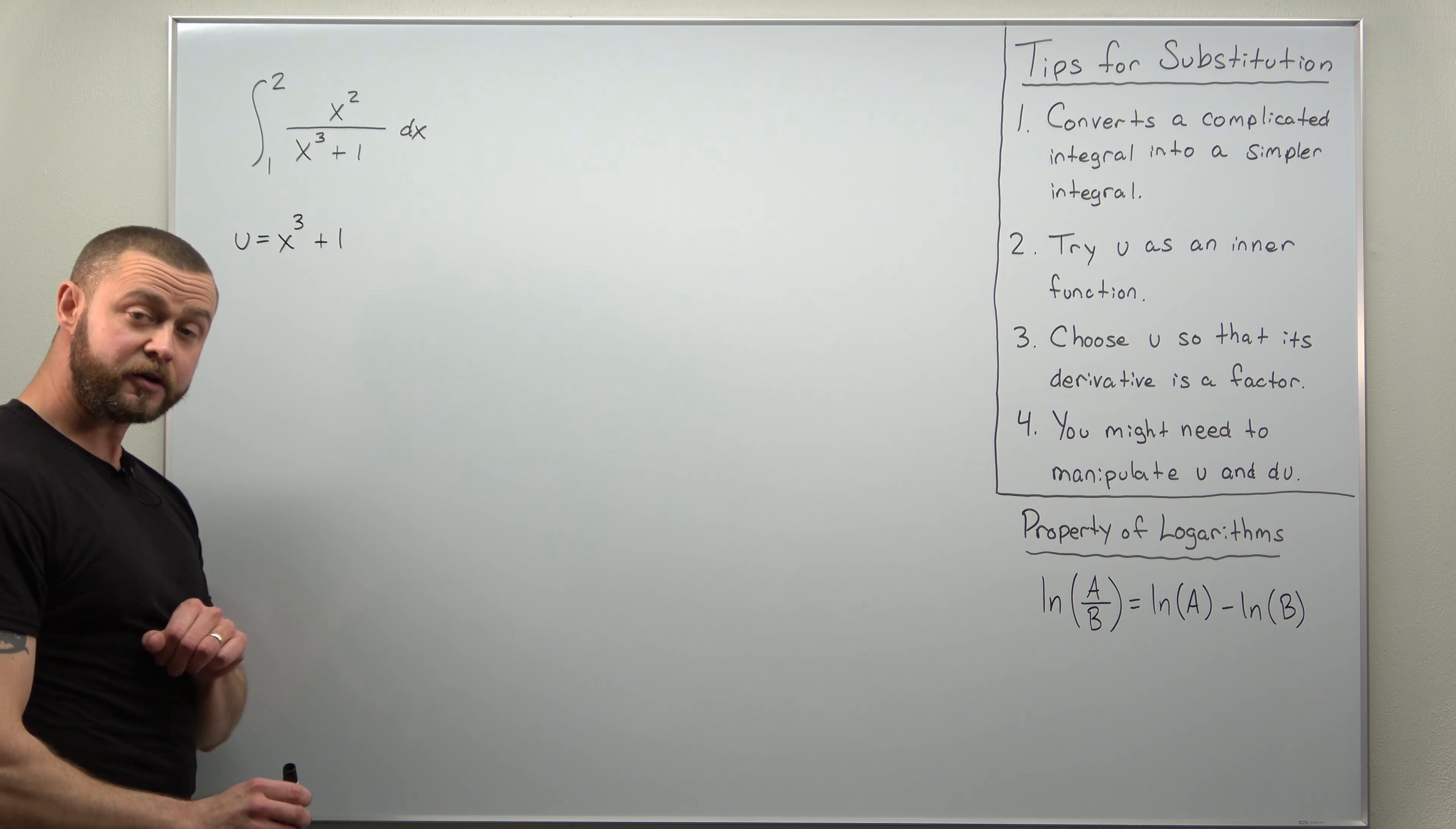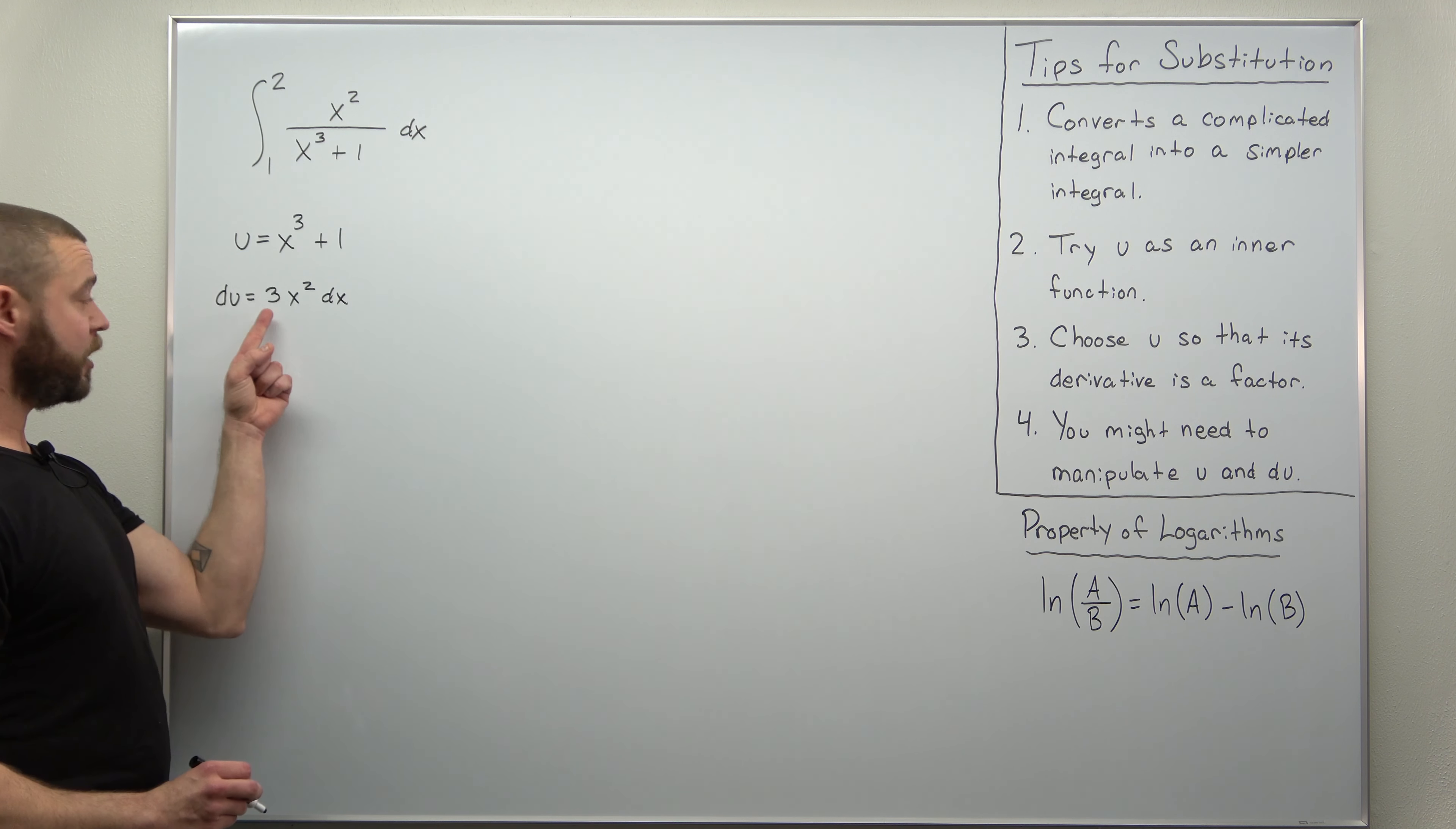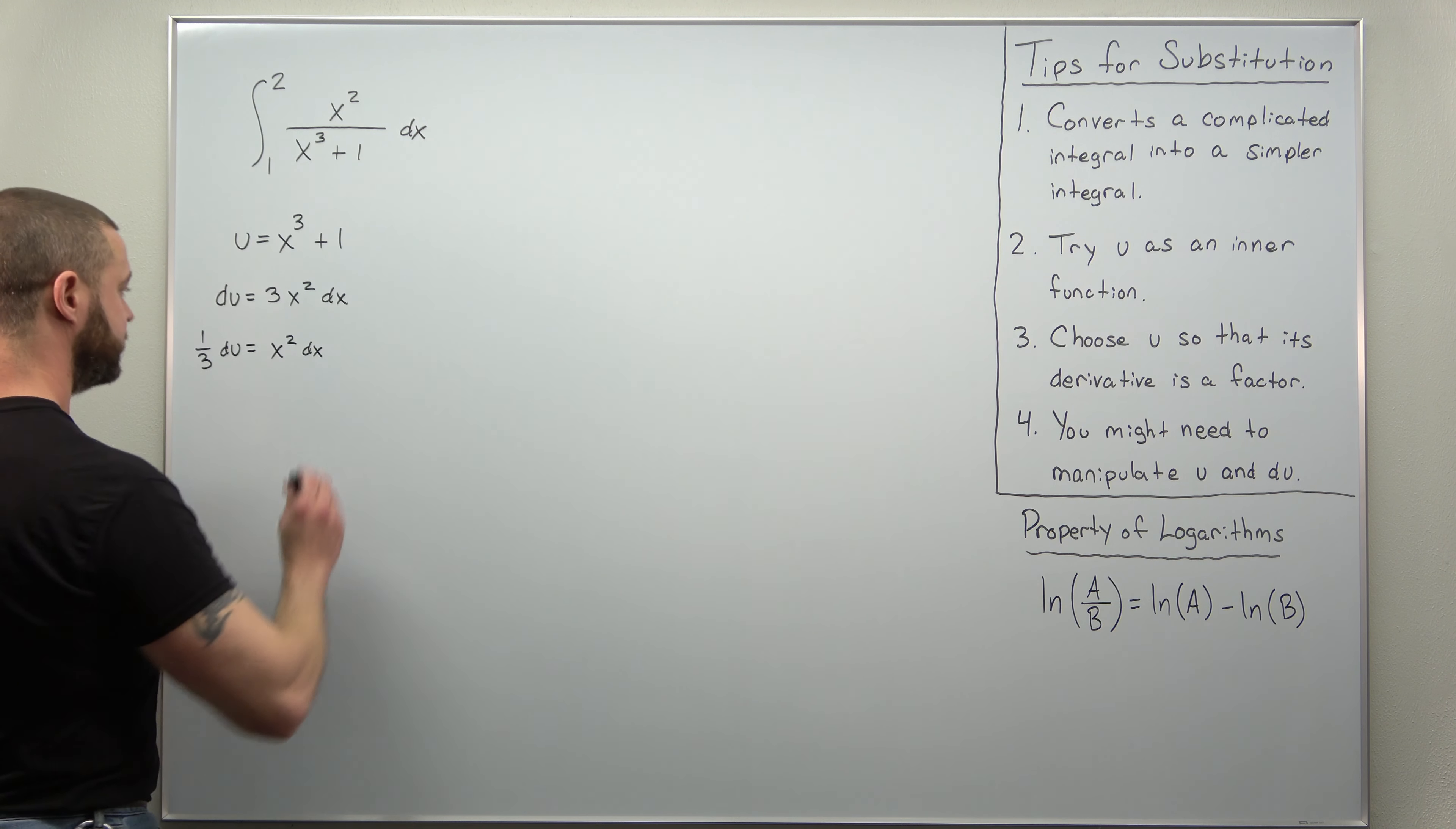Alright calculate your differential as usual. du is going to come out to be 3x squared dx. Alright to do the conversion while we have a factor of x squared we don't have a factor of 3. We're all pros at this point. Divide the 3 over to get one third du equals x squared dx.